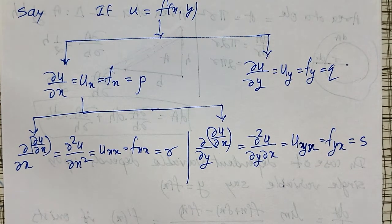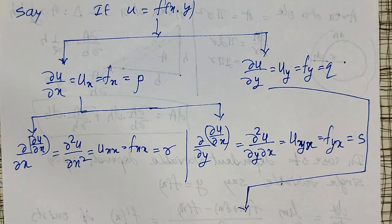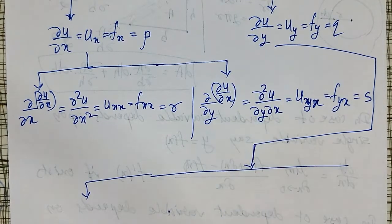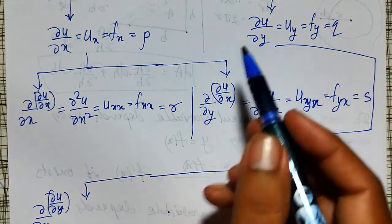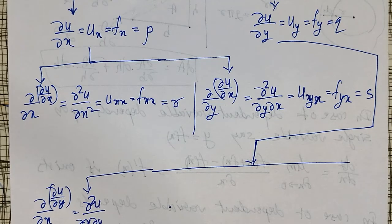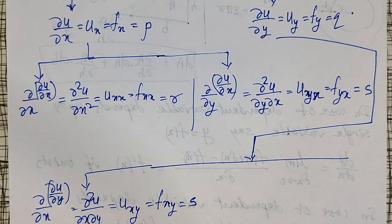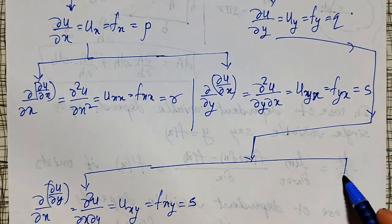Similarly, ∂u/∂y may also be a function of x and y, so it also has two partial derivatives. Differentiating ∂u/∂y with respect to x gives ∂/∂x of ∂u/∂y, written as ∂²u/∂x∂y. The short notation is u_xy, or f_xy, also denoted by s. Note that ∂²u/∂y∂x and ∂²u/∂x∂y are one and the same — I will prove this with an example in the next video.